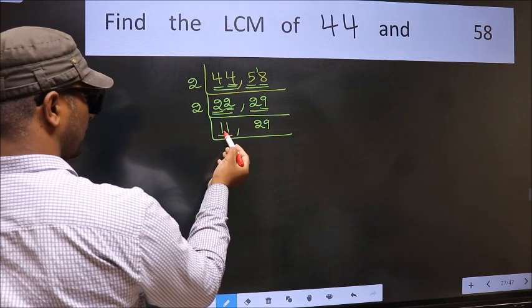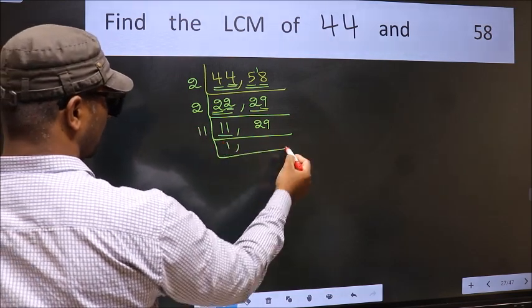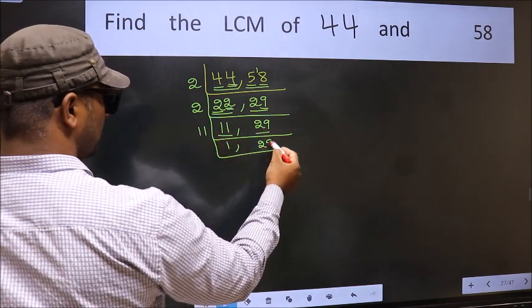Now here we have 11. 11 is a prime number, so 11 once is 11. The other number 29 is not divisible by 11, so we write it down as it is.